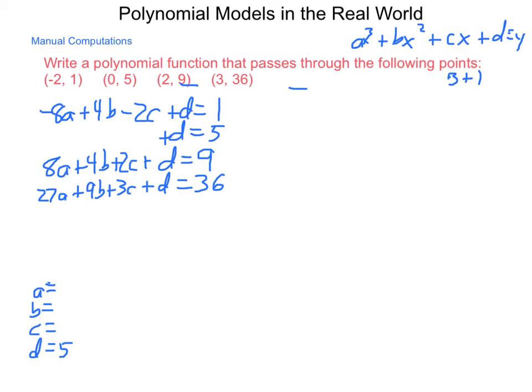Substituting in my value for d, I come out with negative 8a plus 4b minus 2c plus 5 equals 1, and 8a plus 4b plus 2c plus 5 equals 9. Now, subtracting the 5 from both sides in both equations, I come out with negative 4 in the first one and a positive 4 in the second one.